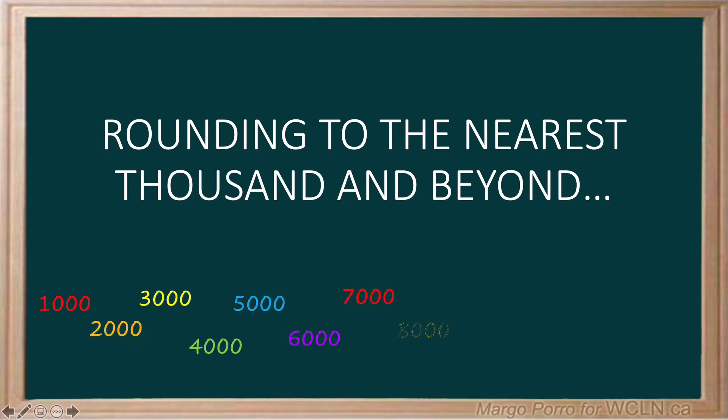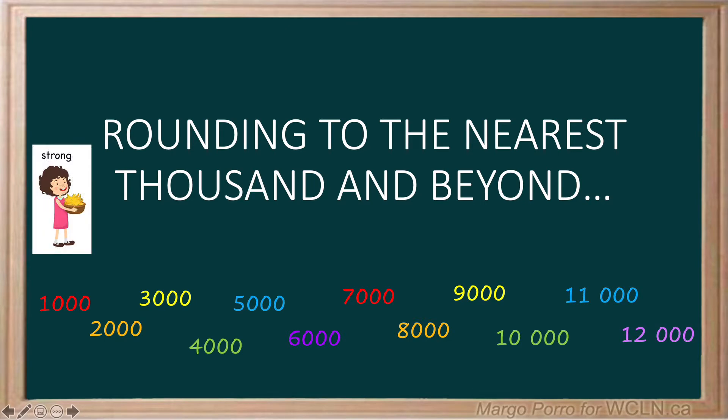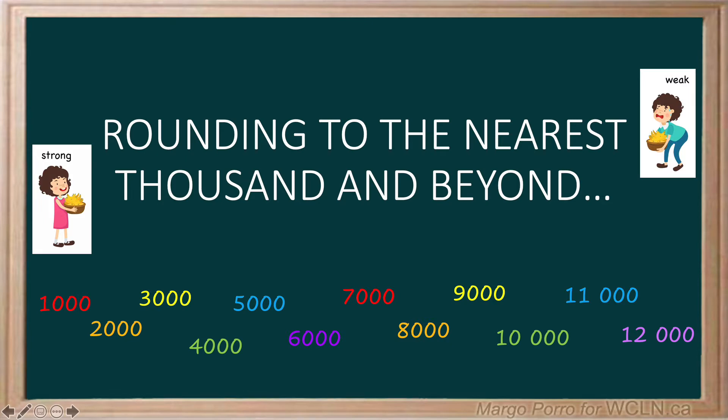Rounding to the nearest thousand and beyond. Did you know you can use the strong numbers, five and above, and the weak numbers, four and below, to round to any digit?